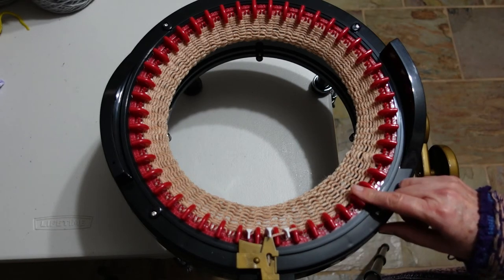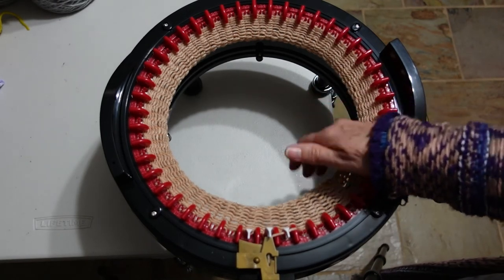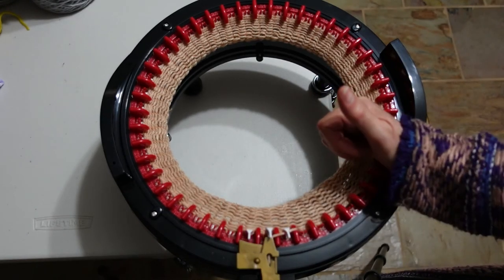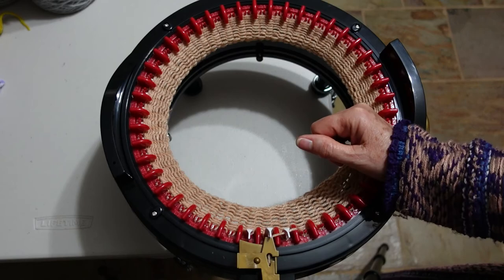So I am now going to just take this off. That was just some practice yarn, I'm not going to make this into anything. And my machine is good to go. So there you have it, my Addi knitting machine king size, unboxed and tested out for the first time, and everything seems hunky-dory. I am really happy with that.